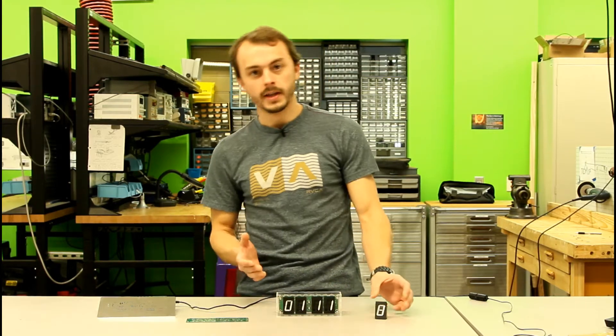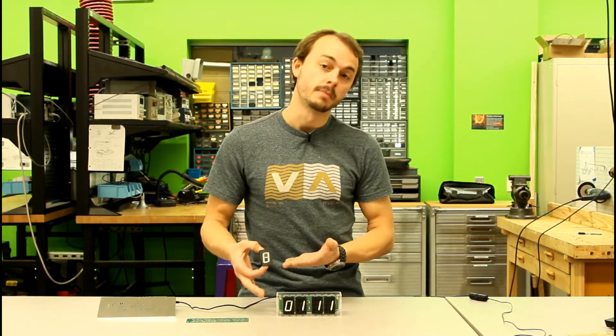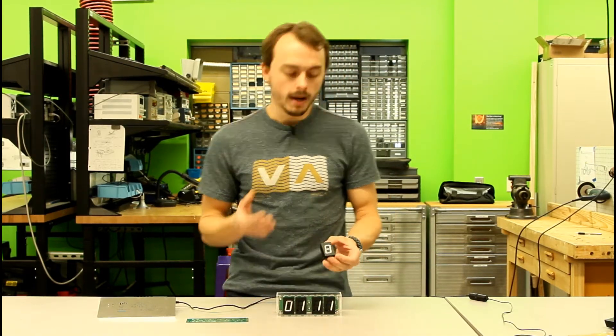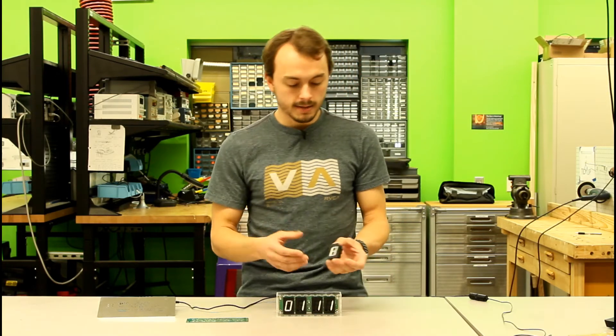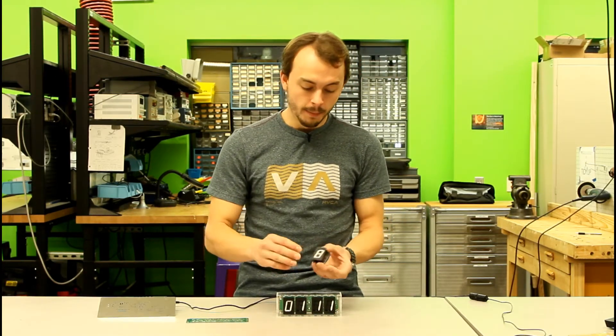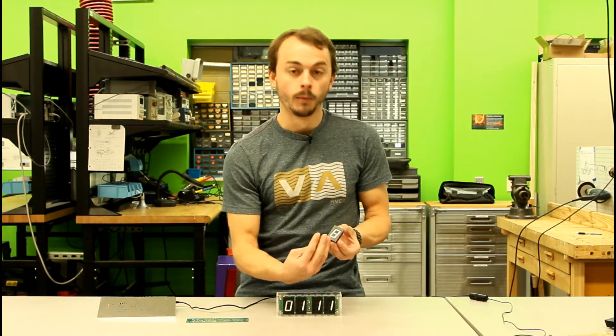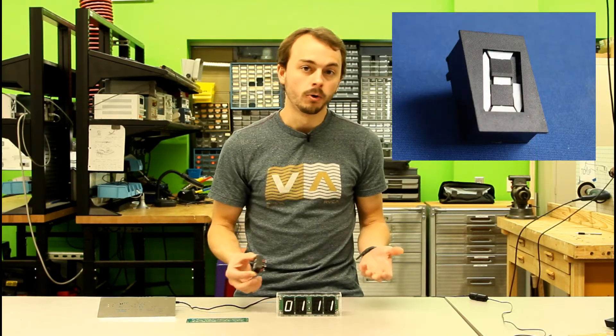My original inspiration for the design of this clock is these seven-segment flip digits. I found these on eBay and they're kind of cool. Normal seven-segment displays just use LEDs. These digits actually have an array of electromagnets on the back that flip little pieces of plastic from white to black and then back to display a different number, and I thought that was pretty cool.